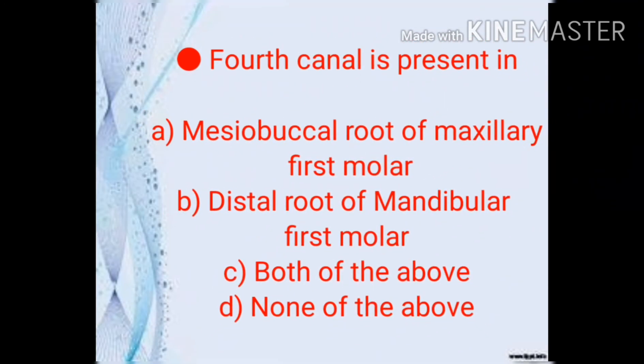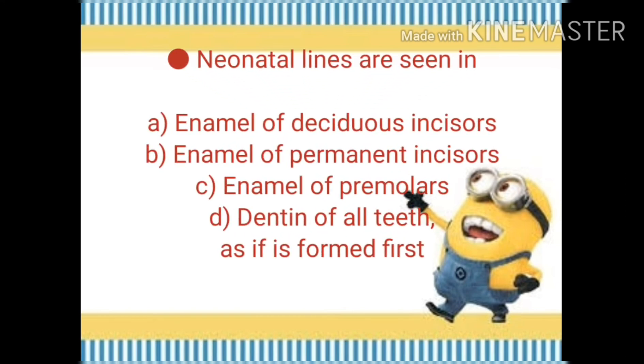The next question: the fourth canal is present in the mesiobuccal root of the maxillary first molar, the distal root of the mandibular first molar, both of the above, or none of the above. Think about it — the answer is C, both of the above.